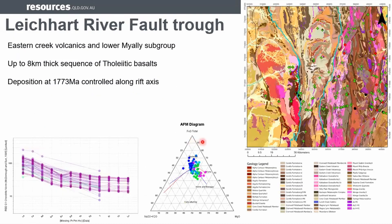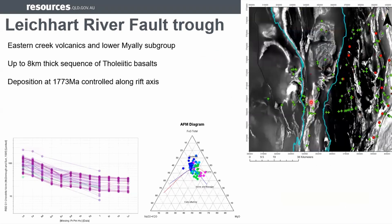Moving to the Leichardt River Fault Trough, we see the same thing here. There are eight kilometres of basalt out there — I haven't worked it extensively, but it's a very important part of the mafic story in Mount Isa, so I have to include it. It's nicely imaged on magnetics, which is good.